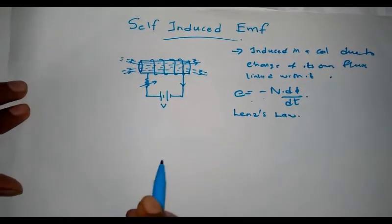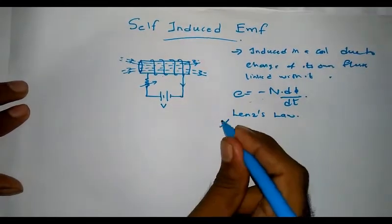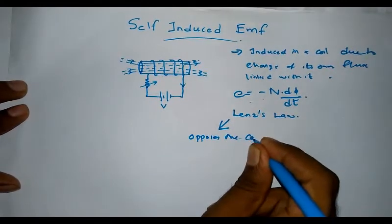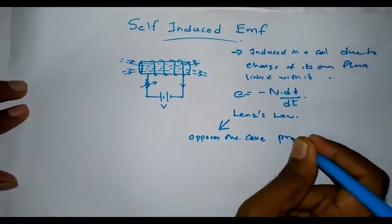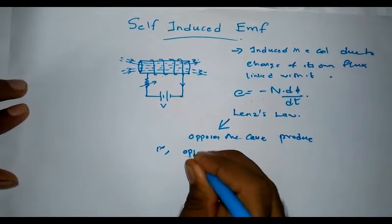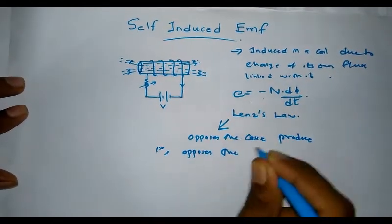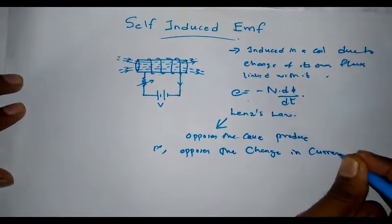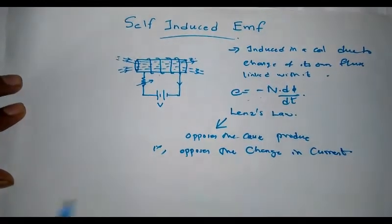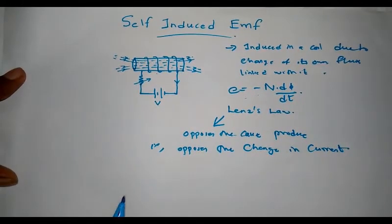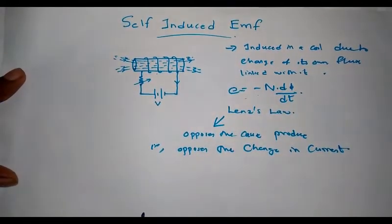As a result of Lenz's law, the self-induced EMF opposes the cause producing it — that is, it opposes the change in current. Self-induced EMF is caused by this change in current, which leads to a change in flux linkages with the coil.